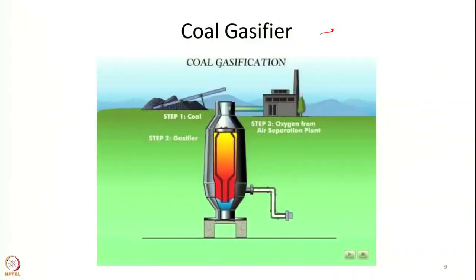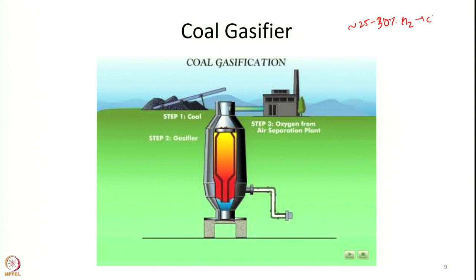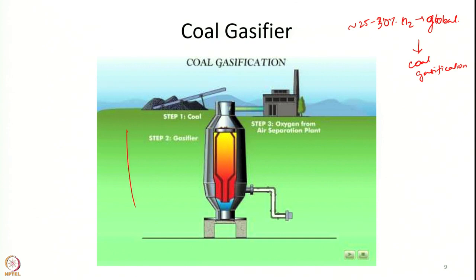Coal gasification contributes around 25 to 30 percent of global hydrogen production — a huge demand requiring big plants. One very economical design uses the underground earth itself as the site supporting the reactor. Inside the earth, they dig out the reactor, supply coal, use an oxygen separation plant to supply oxygen, and extract the gas — sustaining the overall process. This is a very popular coal gasification system.